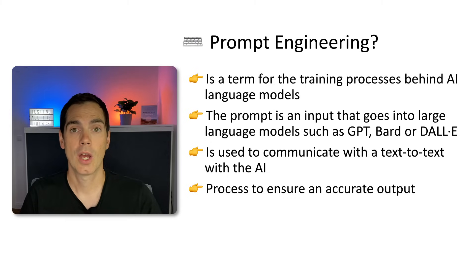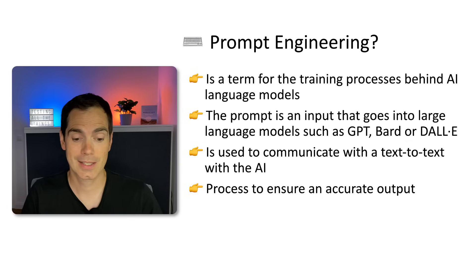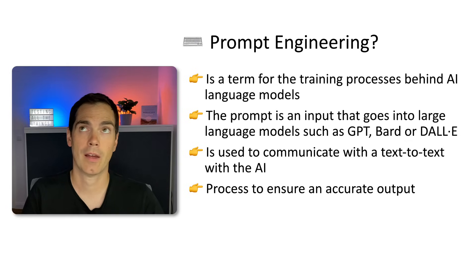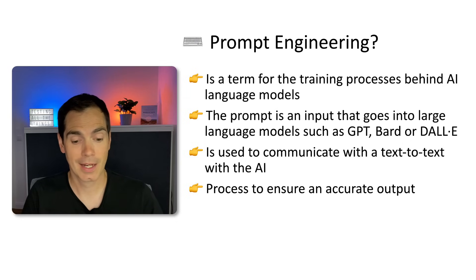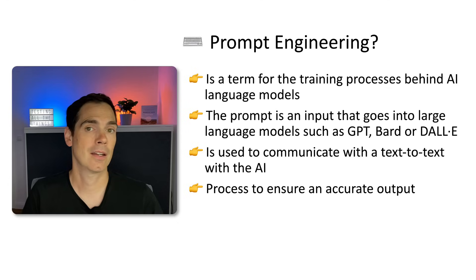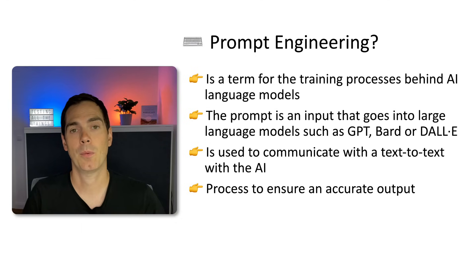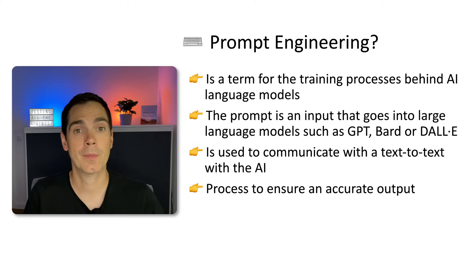I bet you've all used ChatGPT, BARD, or other large language models and you've seen wrong answers. I did some tests lately — I was talking to BARD and asking it to recommend a book about mobile testing, to see if the AI knew my book 'Hands-On Mobile Testing.' The AI did know about the book, but it put in the wrong author. So we always have to take AI results with a grain of salt, and that's why prompt engineering is so important.